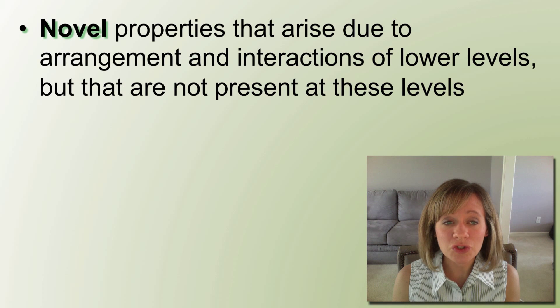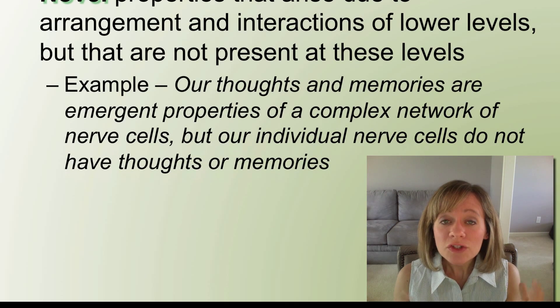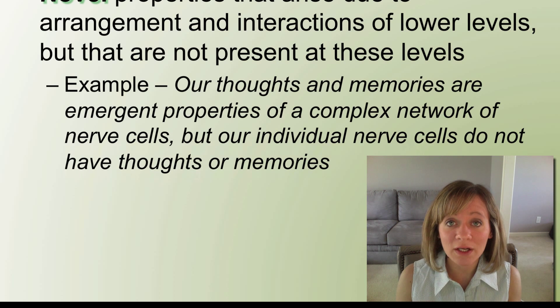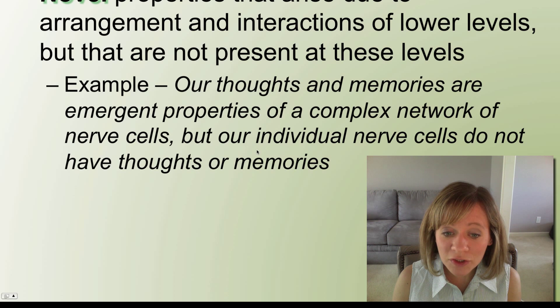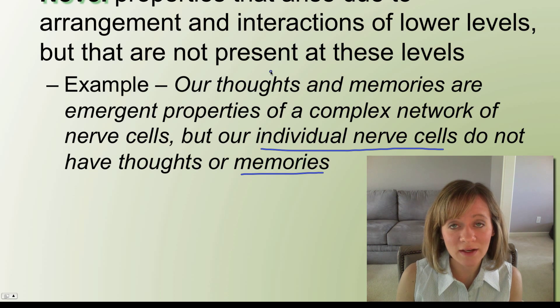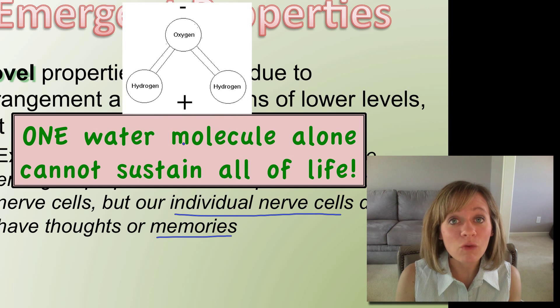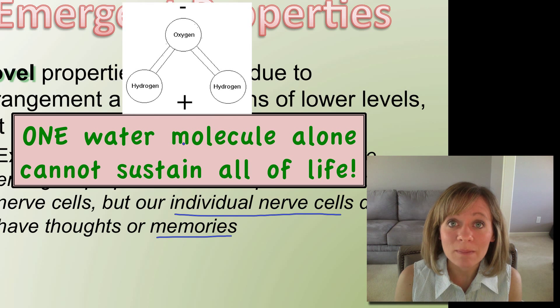Polarity and hydrogen bonds play a huge role in all the things that water does for life. This brings up the idea of emergent properties — novel properties that arise due to arrangements and interactions of lower levels, but that aren't necessarily present at those lower levels. For example, our bodies have thoughts, memories, and feelings, which are emergent properties of the complex network of nerve cells, even though individual nerve cells don't have thoughts or memories. Similarly, one water molecule does not have all the properties that water molecules have when combined together.